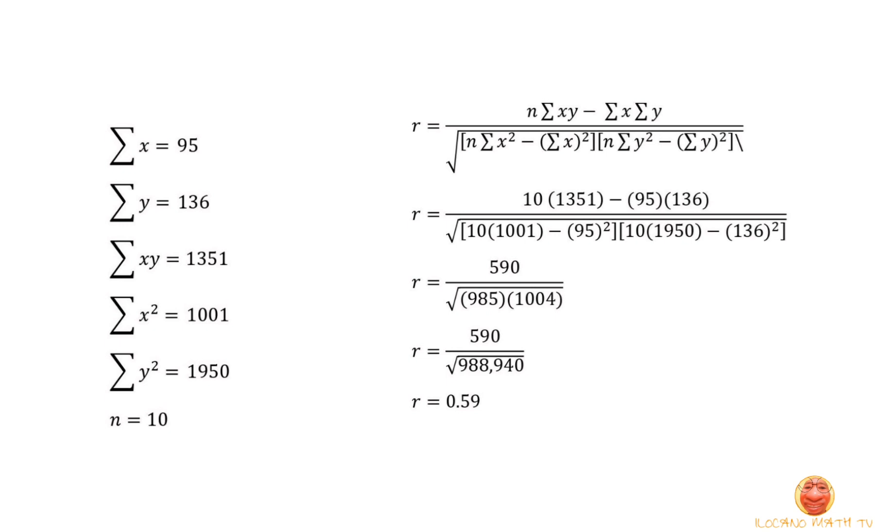So, we'll just substitute them to their own places. N is 10 times summation of XY, which is 1351, minus summation of X, that is 95, times summation of Y, that is 136, all over the square root of N, that is 10 times summation of X squared, which is 1001, minus summation of X, that is 95 squared, and then N, which is 10 again, times summation of Y squared, that is 950, minus the summation of Y, which is the 136 squared.